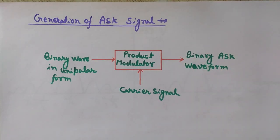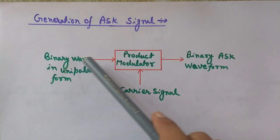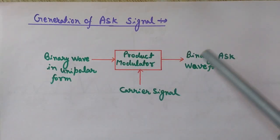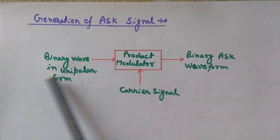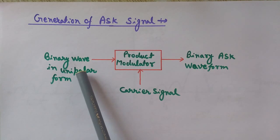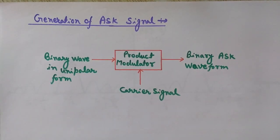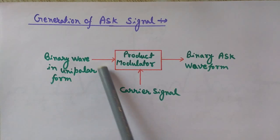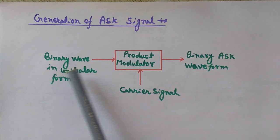The process of generating ASK is simple: we apply the binary waveform at the first input and the carrier wave at the second input of the product modulator, and their product results in the binary ASK signal. One important thing to note is that the binary wave is in unipolar form — unipolar means only one pole. When the input is 1, we transmit the continuous sinusoidal carrier wave; when the input is 0, the carrier wave is not transmitted. There is no negative component.